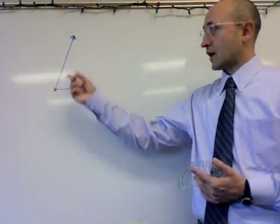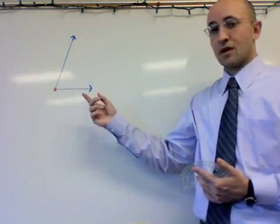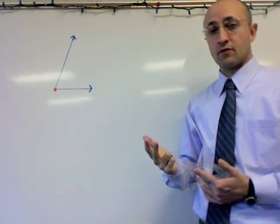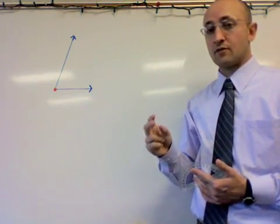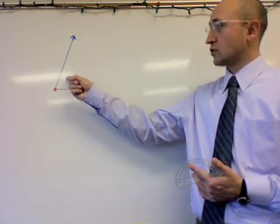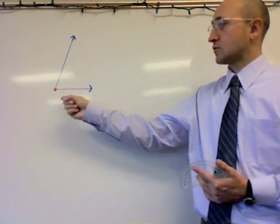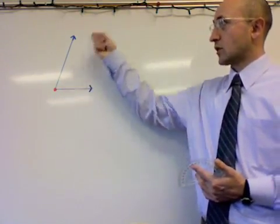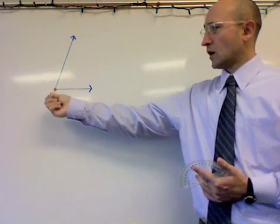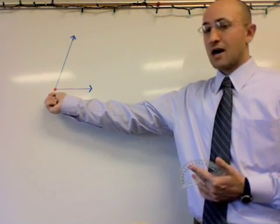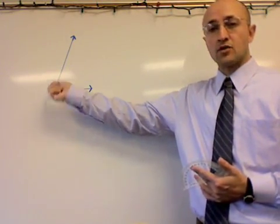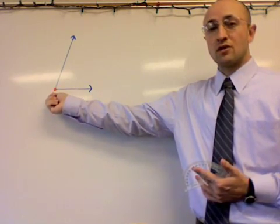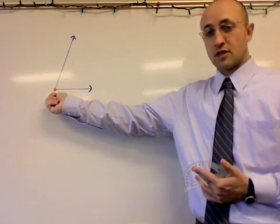What we have here is an angle, and an angle is made up of three different things. We have two rays — those are the blue lines that we see going out, one this way and one going up. And then this red dot is where both of our rays start from, and what this red dot is called is the vertex.